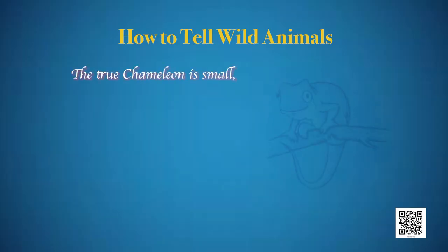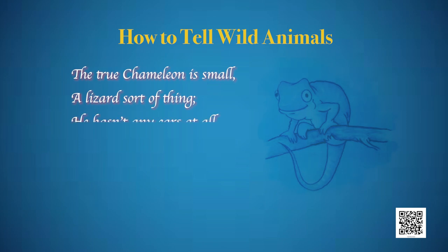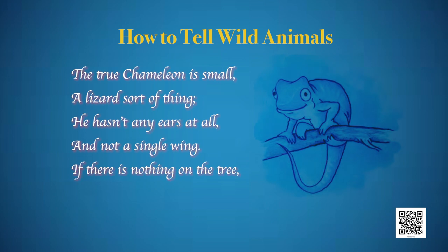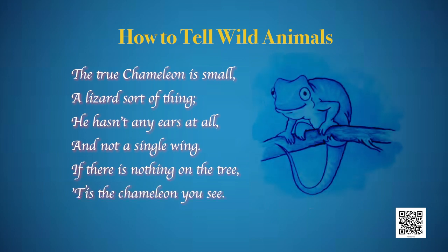'The true chameleon is small, a lizard sort of thing. He hasn't any ears at all and not a single wing. If there is nothing on the tree, it's the chameleon you see.' When there is nothing visible on the tree, you will find the chameleon — but he will be hiding, blending with the color of the background.